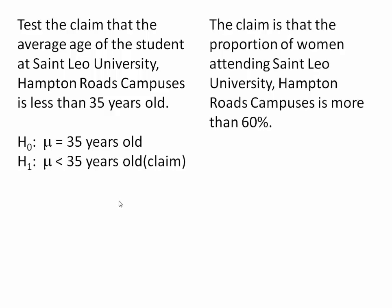In another case, the claim is that the proportion of women attending St. Leo University, Hampton Roads campuses, is more than 60%. Note that we use the parameter P for proportion. So we write that the proportion is greater than 60% — that's our claim and what we want to test. Therefore, our null hypothesis is a statement of equality, where the proportion of women is equal to 60%.